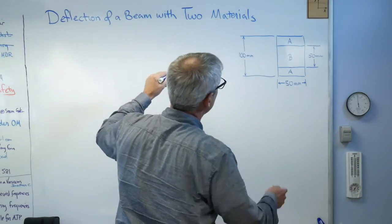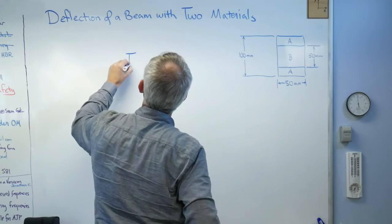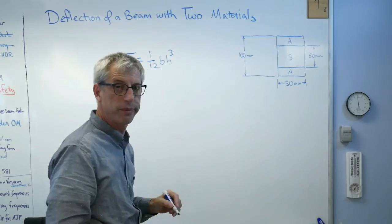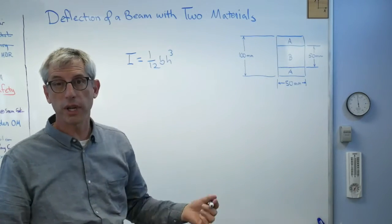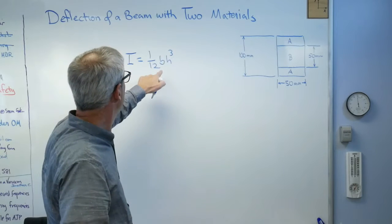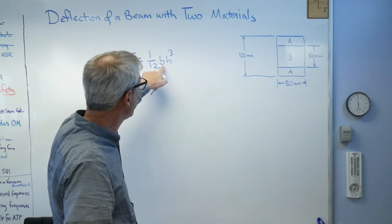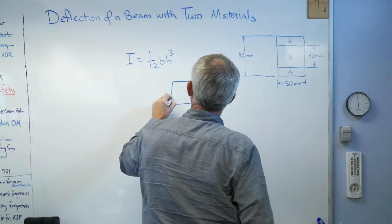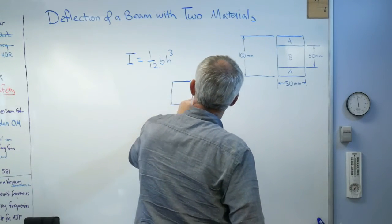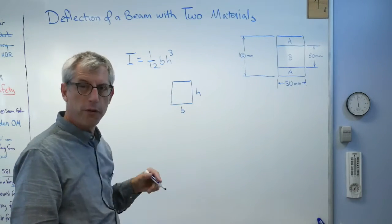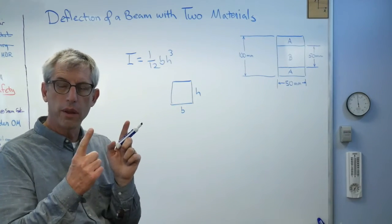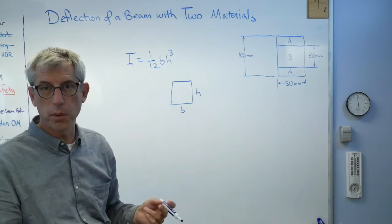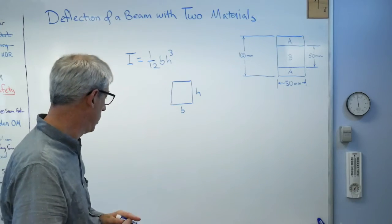So here's how this works. The stiffness of a rectangle, the area moment of inertia of a rectangle is 1/12 bh cubed. So the stiffness due to cross-sectional shape, which is this, varies linearly with the width. This is meant to represent a rectangle where that's base and that's height. If I change the width, the stiffness changes proportionally. If I change the height, it changes disproportionately.